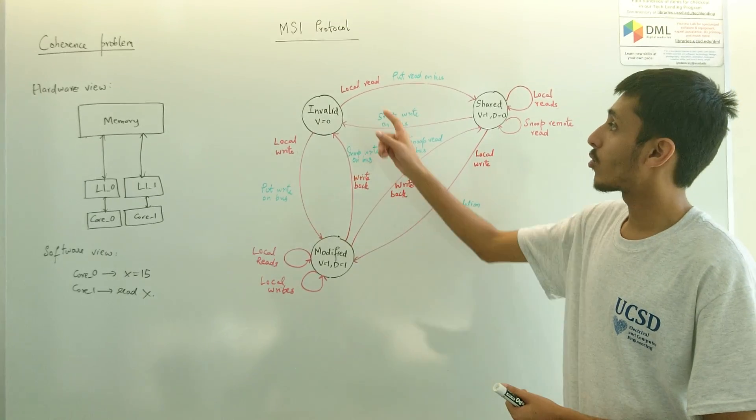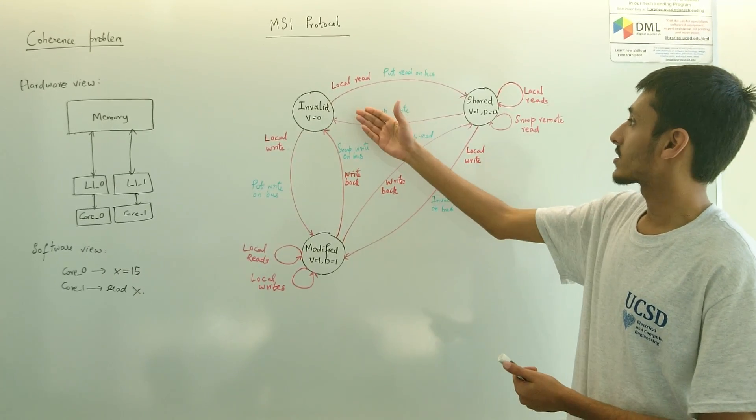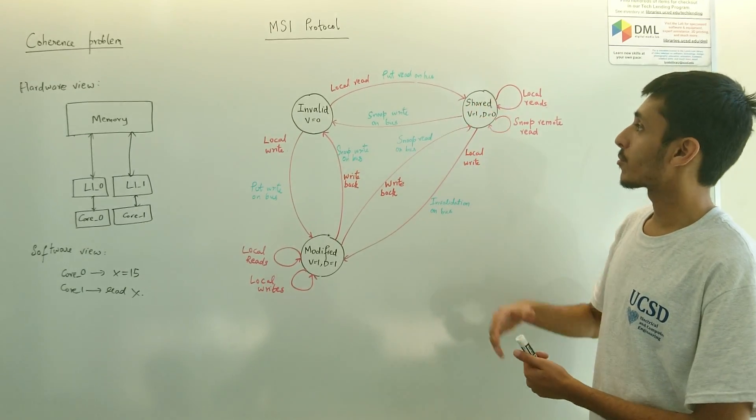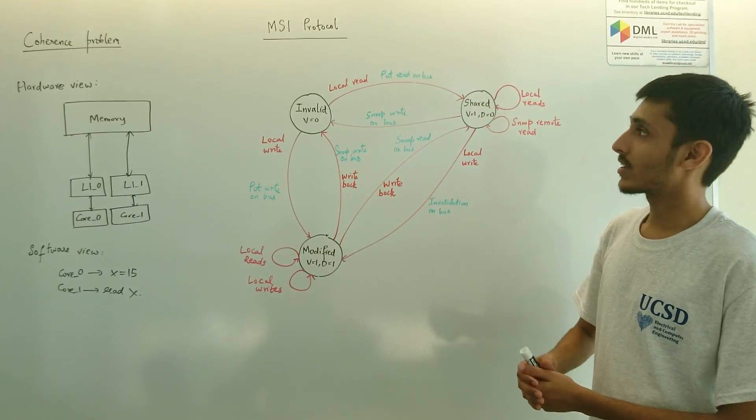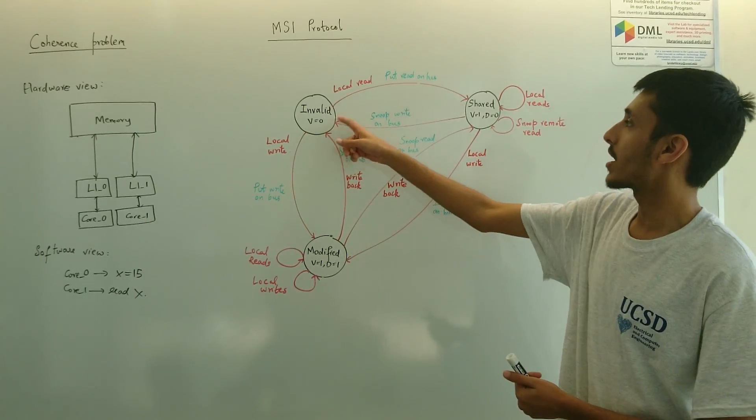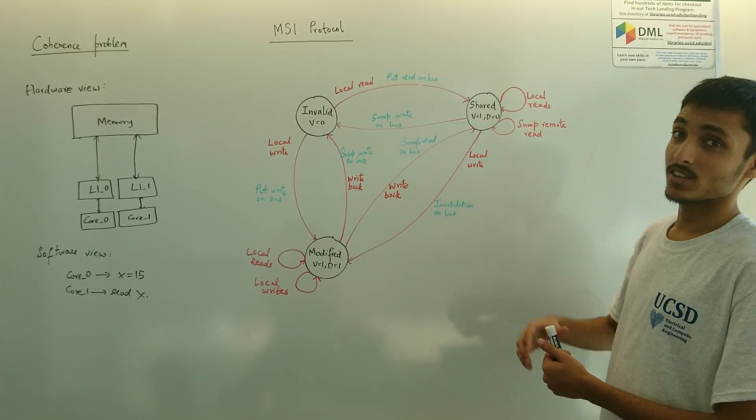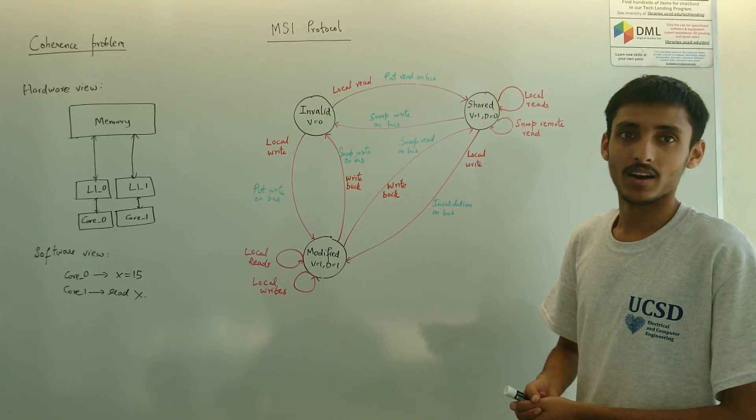Similarly, if there is a line in invalid state and it wants to do a local read, this time it can actually just ensure that it is doing read from a shared line. How that is done is it basically puts a read on the bus. Putting a read on the bus and moving itself to a shared line, which means that it has got a valid line, but the line is not dirty because it hasn't done a write.